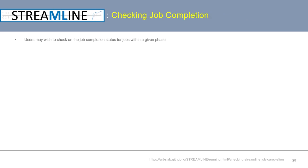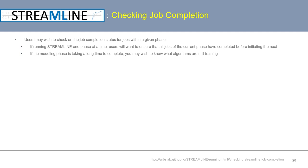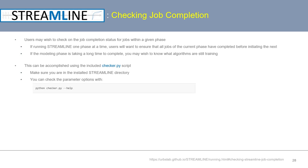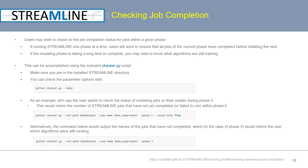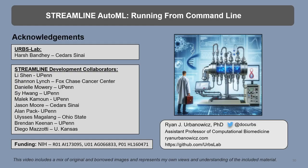One last helpful functionality included in Streamline when running on an HPC is the ability to check job completion when running one phase at a time. This helps users ensure all jobs of the current phase have completed before initiating the next, and if the modeling phase is taking a long time, you can find out which algorithms are still training. This is accomplished with the included script called Checker.py. Make sure you're in the installed Streamline base directory, then examine Checker.py's parameter options. For example, to check the status of modeling jobs during phase 5, one command returns the number of jobs not yet completed or failed, and another outputs the names of jobs that have not completed — which in phase 5 tells you which algorithms are still running.